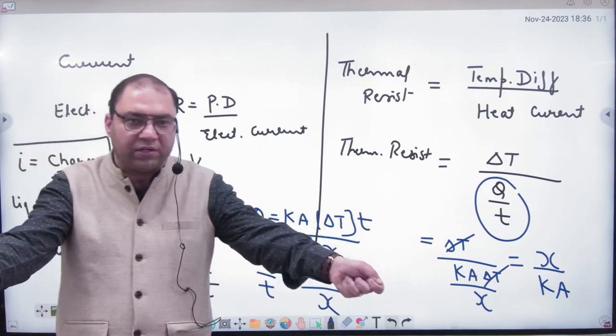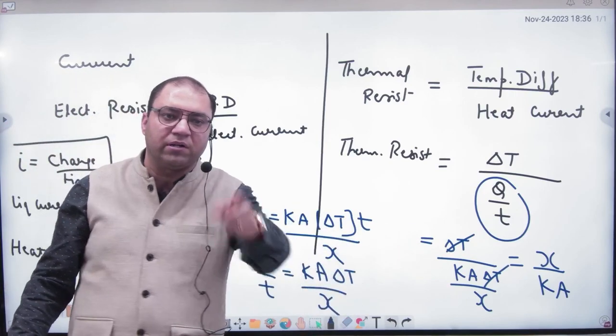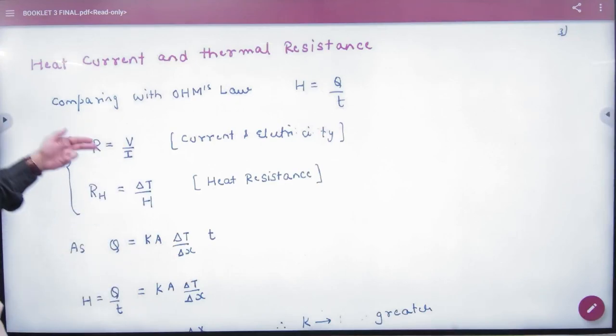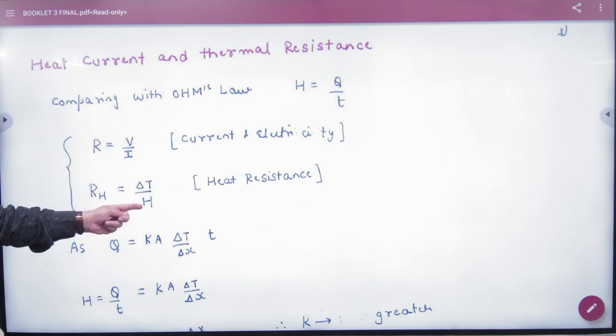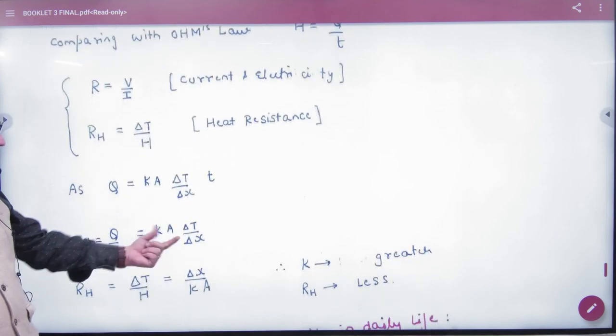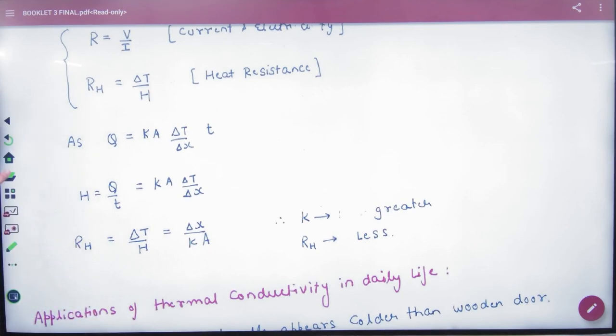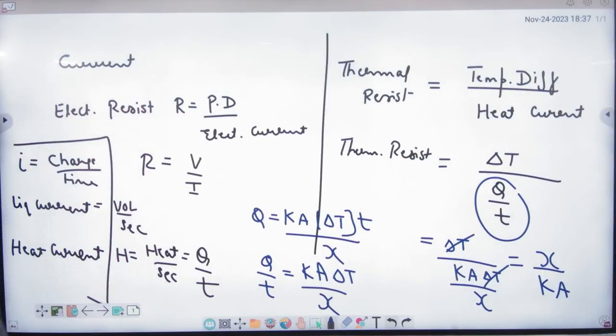So the formula is thermal resistance, which is the length of the conductor we divide it by K and A. The formula thermal resistance is not in school, but the objective has the value of thermal resistance. Like V by I in electricity, in this chapter potential difference is temperature difference and I is heat current, thermal resistance. So I have removed H from Q by T and cross-multiplied. And you have the answer delta X upon K A. This is thermal resistance value, X upon K into A.